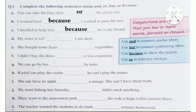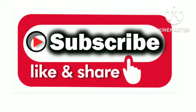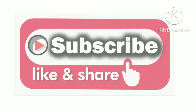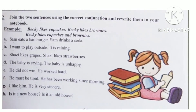I have done three parts for you, and now you will do the rest of the parts yourselves. Look at question number 2 now. Question 2 is your home assignment, and you will do this assignment in your grammar copies. Question number 2 is: join the two sentences using the correct conjunction and rewrite them in your notebook.